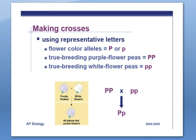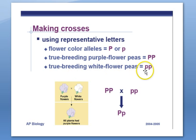When making crosses, we use representative letters — the letters aren't actually found on the chromosomes, but represent a sequence of DNA that will make a trait. Capital letters represent dominant traits; lowercase letters represent recessive traits. True-breeding purple flowers would be PP; true-breeding white flowers would be pp. When you cross PP with pp, using the 'x' symbol to indicate the cross, all offspring receive one P and one p, giving them the genotype Pp — which shows purple flowers since purple is dominant.